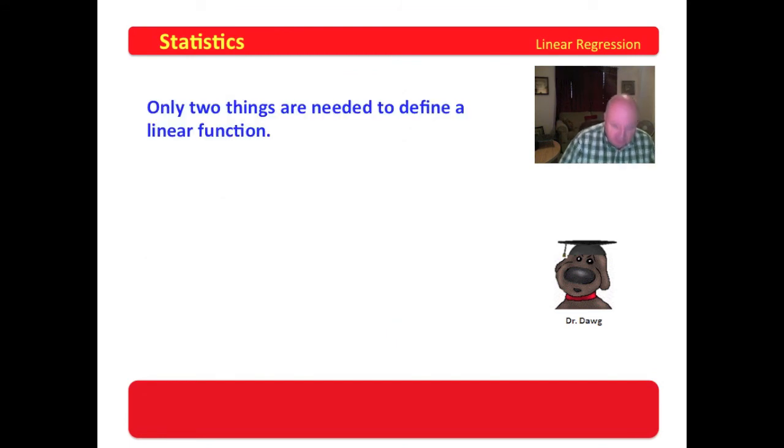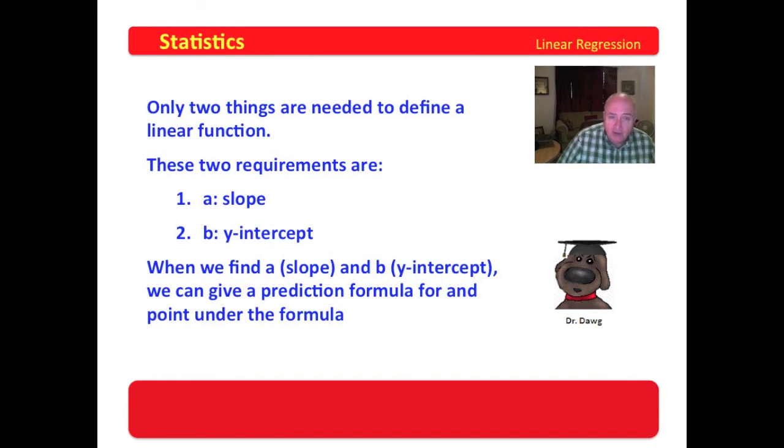Only two things are needed to define a linear function. These two requirements are first a, which is the slope, and b, which is the y-intercept. So if you know the slope and the y-intercept, you can get a prediction formula for any point under the formula. And okay, so the formula would be y equals ax plus b if we know the slope and we know the y-intercept.